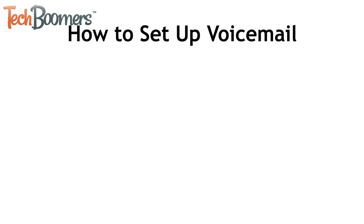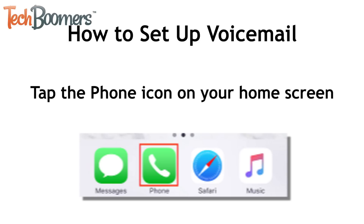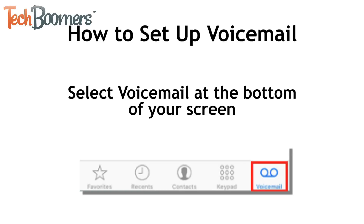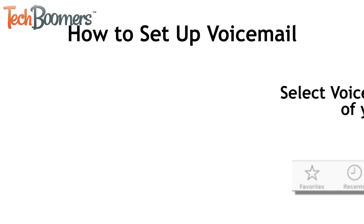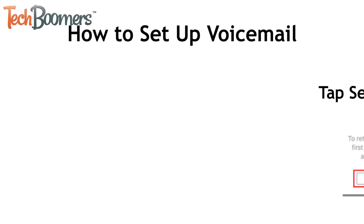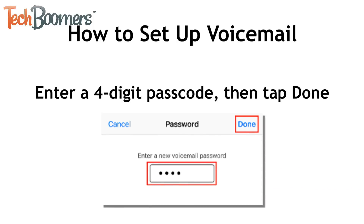First, let's go over the instructions for how to set up voicemail on iPhone. Tap the phone icon on your home screen. From the menu that appears at the bottom of your screen, select voicemail. On the next page, tap set up now. Enter a four-digit passcode you'd like to use for your voicemail, then tap Done.